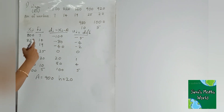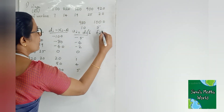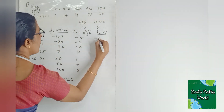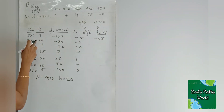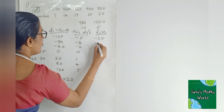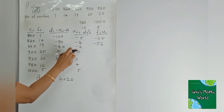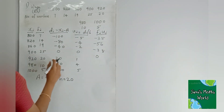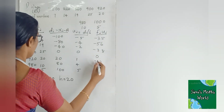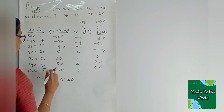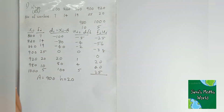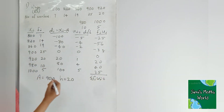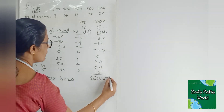Next step: calculate fi into ui. Fi·ui: 7 into minus 5 equals minus 35; 14 into minus 4 equals minus 56; 19 into minus 2 equals minus 38; then 0; 20 into 1 equals 20; 10 into 4 equals 40; 5 into 5 equals 25. Then find sigma fi·ui, which equals minus 44.